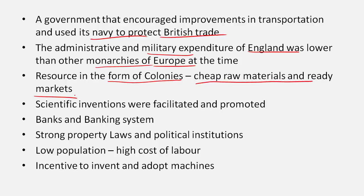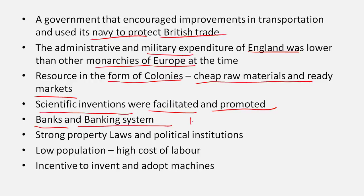There was also the resource in the form of colonies — especially India — from where cheap raw materials and ready markets were available. India was the biggest source of raw cotton for England, and the textile industry was one of the first to be industrialized. Later, even colonies in North America and Africa were exploited — Africa was mainly colonized for raw materials. Scientific inventions, especially in chemistry, were also facilitated by societies like the Royal Society of London.